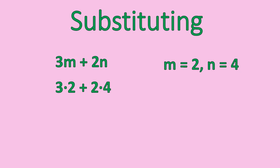When you have a letter and number next to each other, like 3m, that means 3 times m, or in this case, 3 times 2. 2n means 2 times n, or 2 times 4.